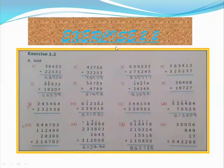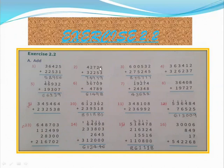Next, Exercise 2.2 — also addition. First: 36,425 plus 22,531 — answer equals 58,956. Second: 42,726 plus 32,253 — answer equals 74,979. Third: 6,532 plus 2,75,245 — answer equals 8,75,777. Fourth one you have to do.